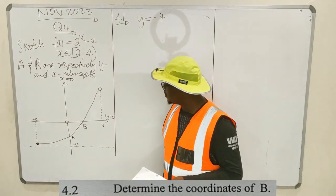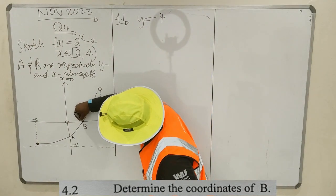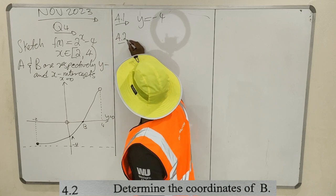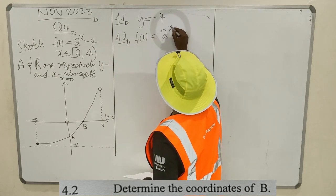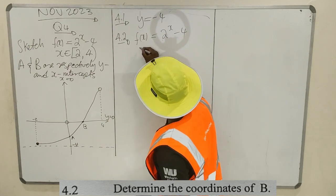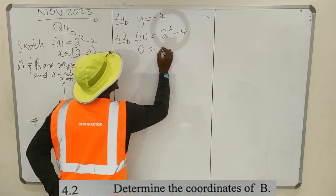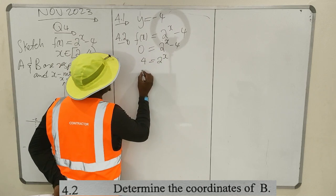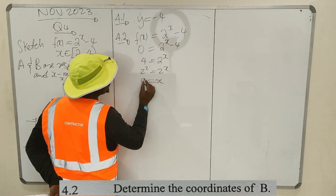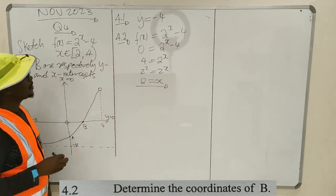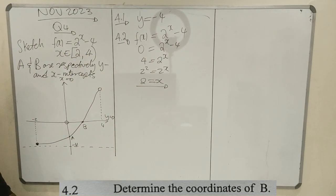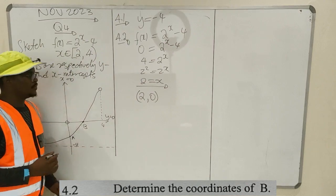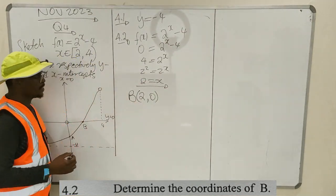4.2: Determine the coordinates of b. b is the x-intercept, so y is 0 there. f of x equals 2 raised to x minus 4, and we know y is 0. So 0 equals 2 raised to x minus 4, which gives 4 equals 2 raised to x, so 2 squared equals 2 raised to x, therefore x equals 2. The coordinates of b are (2, 0).